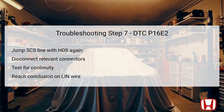In this conclusive troubleshooting step, repeat the process of jumping the SCS line using the HDS for consistency in testing. Disconnect the alternator 1P and PCM connector B as required, then check continuity once again between test points 1 and 2 with both connectors disconnected. If continuity remains stable, the LIN wire is confirmed operational — either plan to replace the alternator or conduct final verifications. If any interruption is found, this leads to focused repairs on the LIN wire connecting the alternator to the PCM.